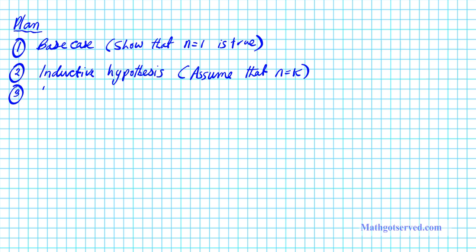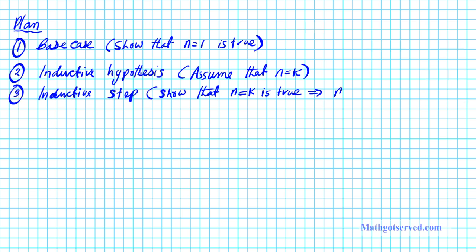Lastly, part 3 is the inductive step. This is normally the hard part in the whole mathematical induction proof process. Here you want to show that n equals k is true by assumption, which follows that n equals k plus 1 is also true. So these are the three parts of our proof. Let's take a look at question 11.